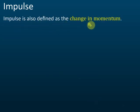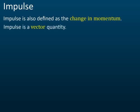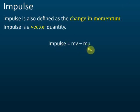Impulse is also defined as a change in momentum. When you give an impulse, you cause a change in momentum. Impulse is a vector quantity because momentum is a vector quantity. So impulse is equal to mv minus mu.